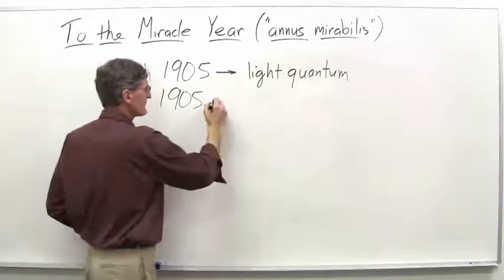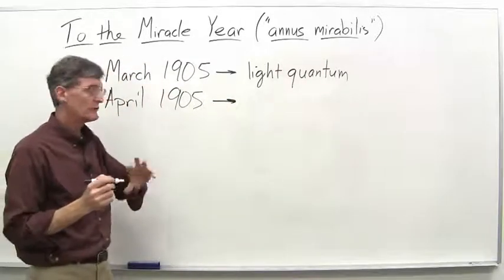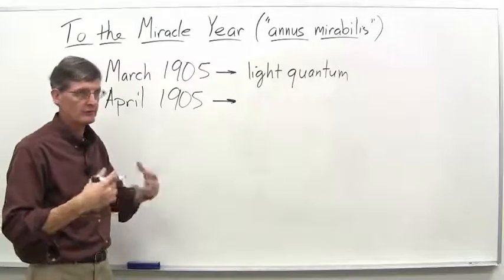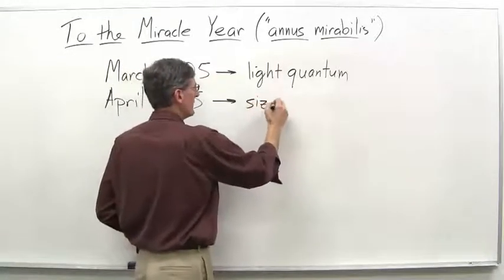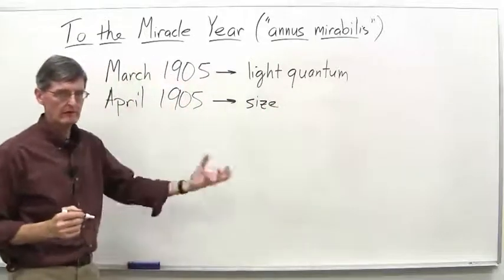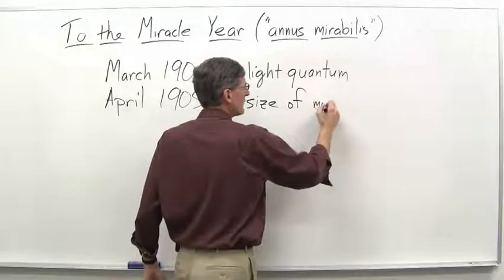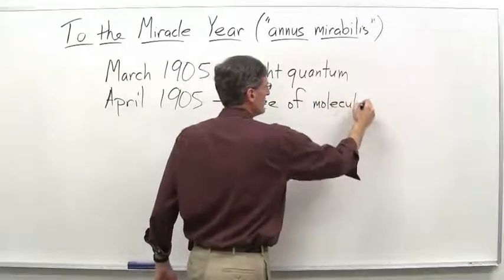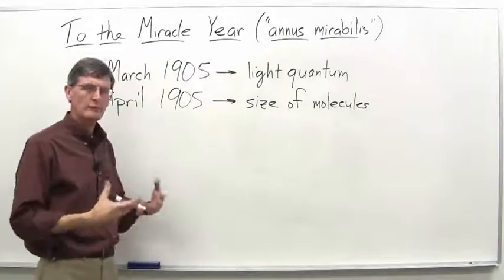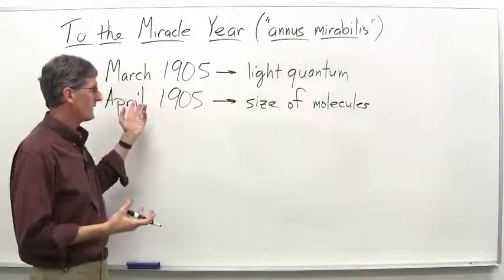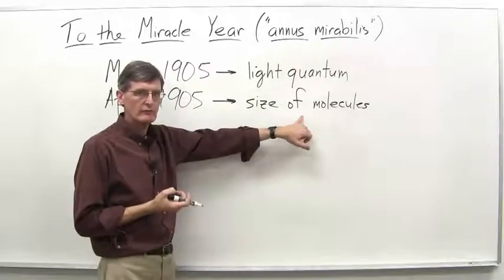April 1905, published a paper that actually became his doctoral dissertation. This was essentially at least the second attempt at a doctoral dissertation. He had had a couple other attempts that never got anywhere. And of all the papers that he published in 1905, this is maybe the most, I wouldn't call it ordinary, maybe mundane.